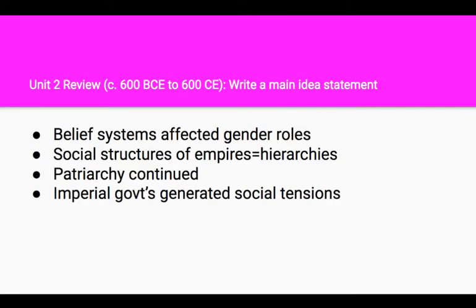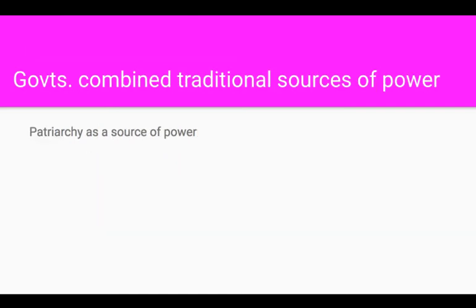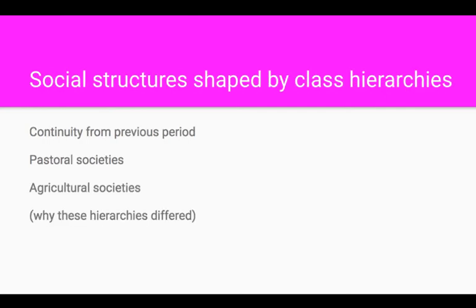Now write a main idea statement for Unit 2. For Period 3, 600 to 1450, one of the things that governments did was use traditional sources of power, like patriarchy. Another thing to remember is that these structures were shaped by class hierarchies — this is a continuity. In pastoral societies, they tend to be less gender-oriented than agricultural societies. Because pastoral societies are on the move all the time, we have a connection to the Paleolithic era and hunter-gatherers.